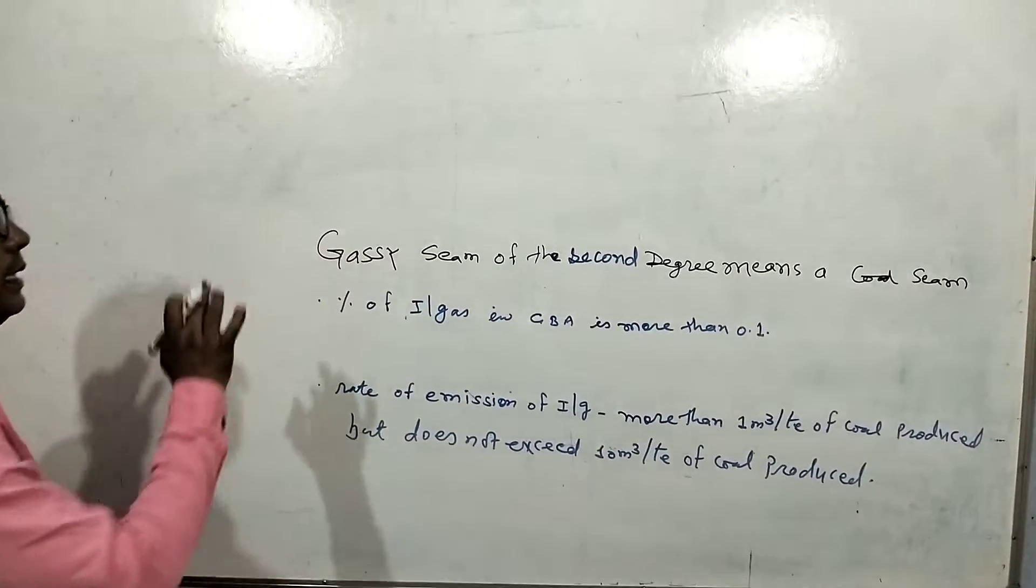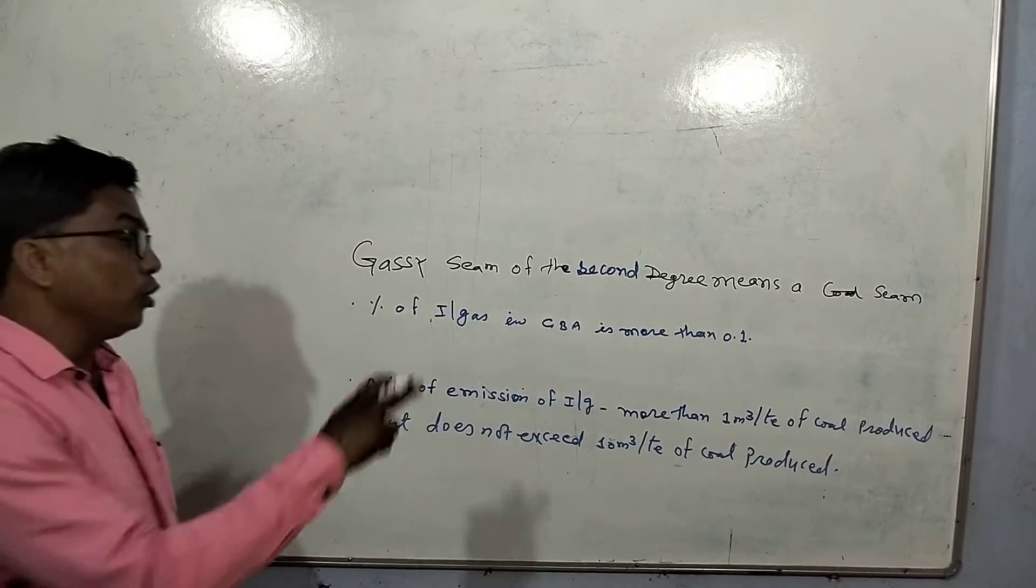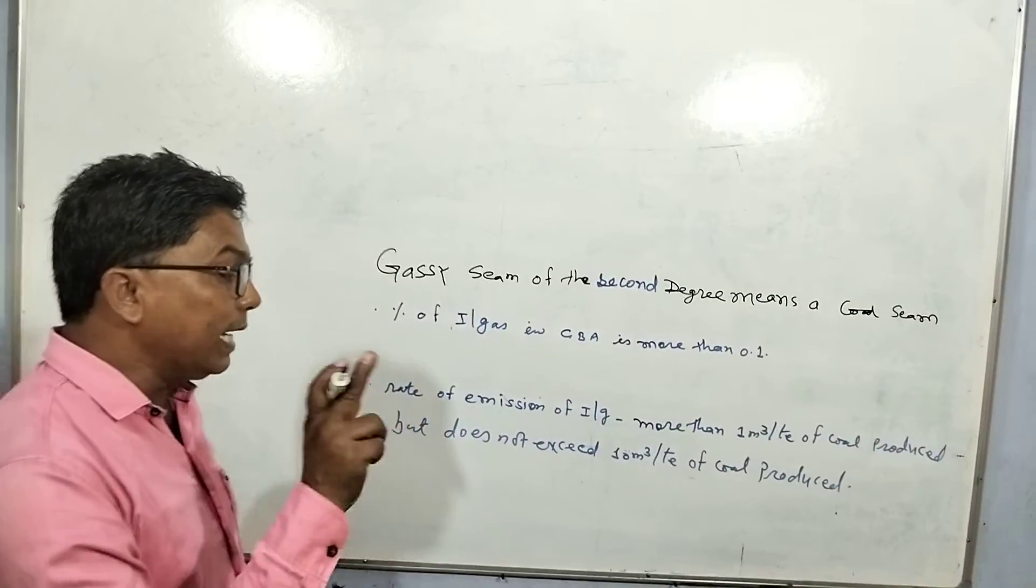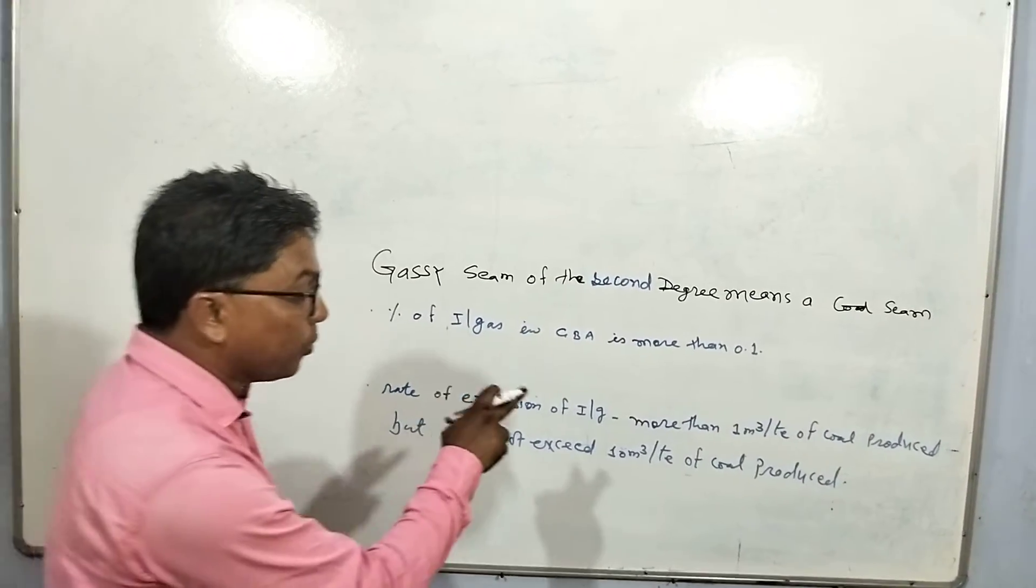One: percentage of influx gas is more than 0.1. Rate of emission of influx gas is more than 1 cubic meter per ton of coal production.